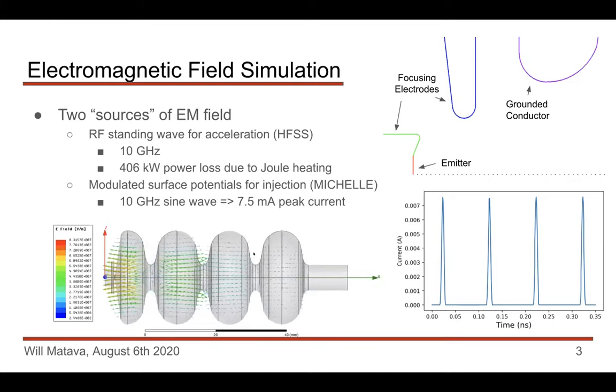The second piece of the EM field we need to worry about comes from how we actually want to inject the electron into our cavity, and we do that via modulated surface potentials. We have three electrodes in green, blue, and purple, and then we have this emitter. These three electrodes are all at constant potentials, and the emitter's potential wiggles up and down with another 10 gigahertz sine wave.